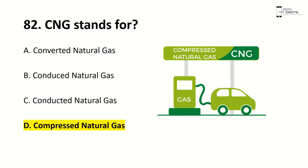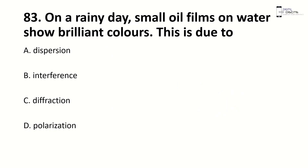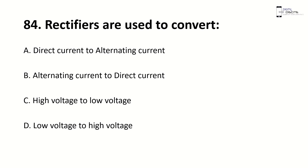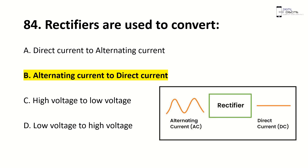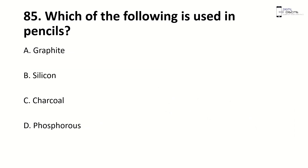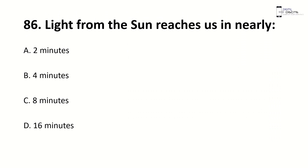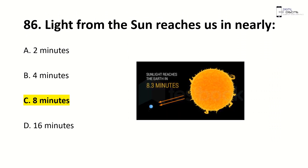CNG stands for compressed natural gas. On a rainy day, small oil films on water show brilliant colors due to interference. Electric rectifiers are used to convert alternating current to direct current. Graphite is used in pencils. Light from the sun reaches us in nearly — right answer is C, 8 minutes. One watt-hour is equivalent to — right answer is C, 3.6 × 10³ joules.